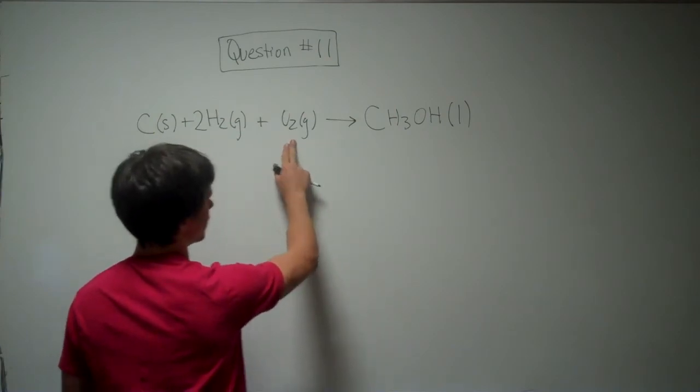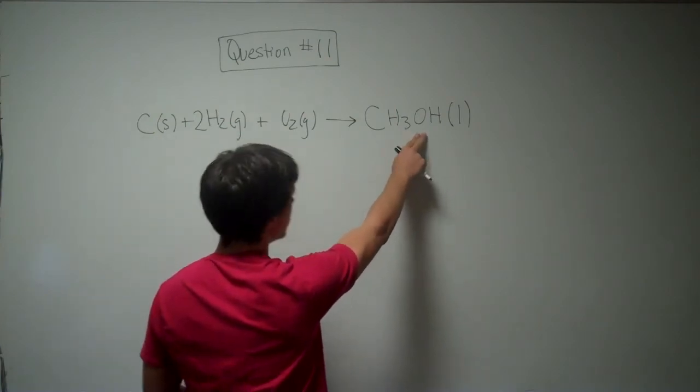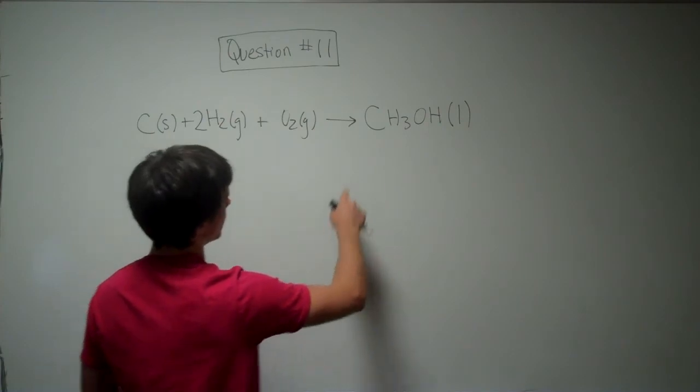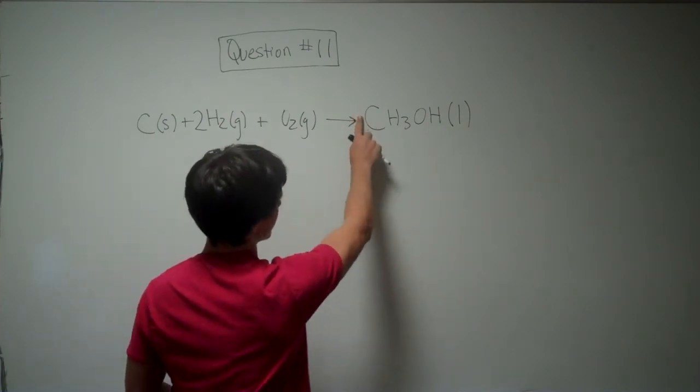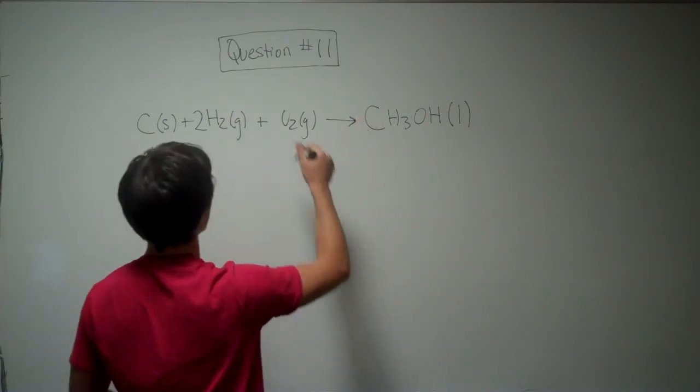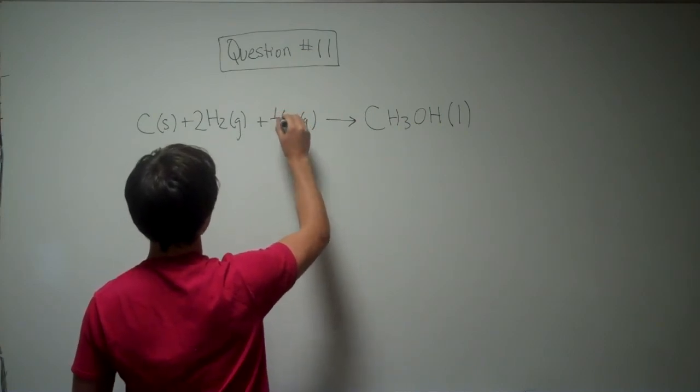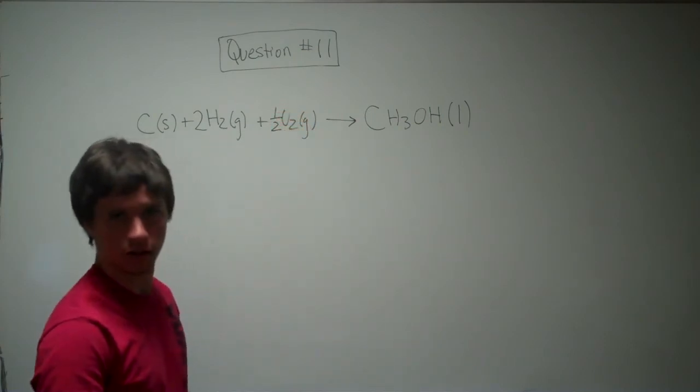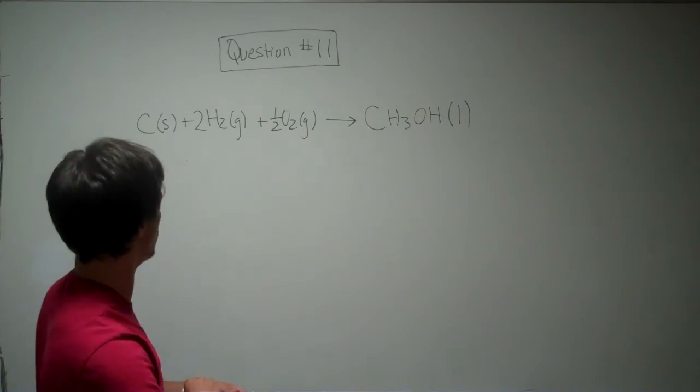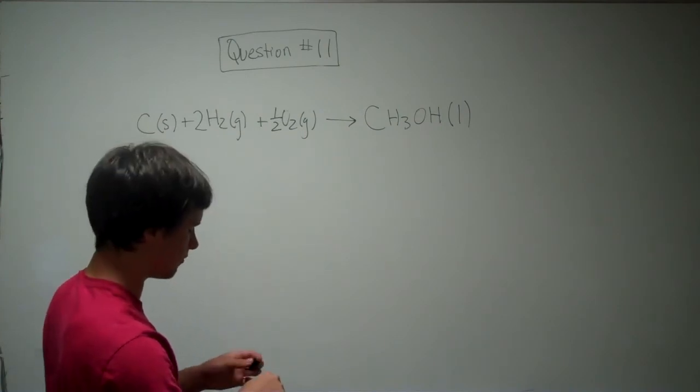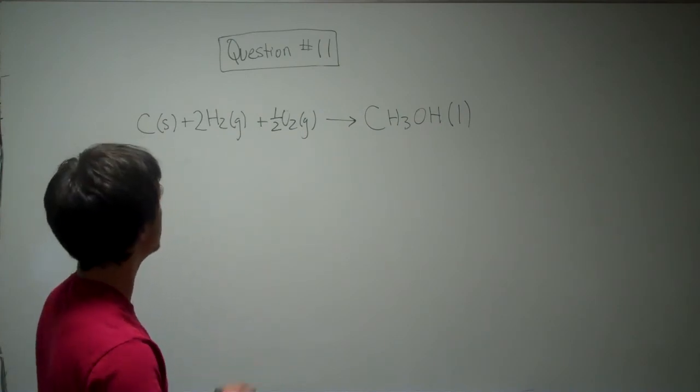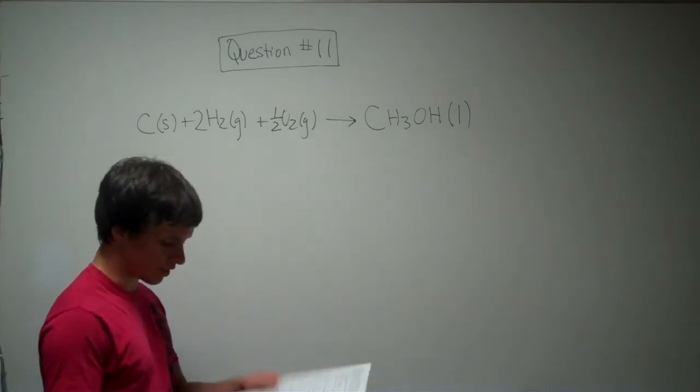And we have two oxygens here, but one oxygen over here, so we can't change the coefficient of this. It has to be one, but we can have half a mole of diatomic oxygen instead of one mole. So there's your balanced equation for the formation of methanol from its elements in their standard states.